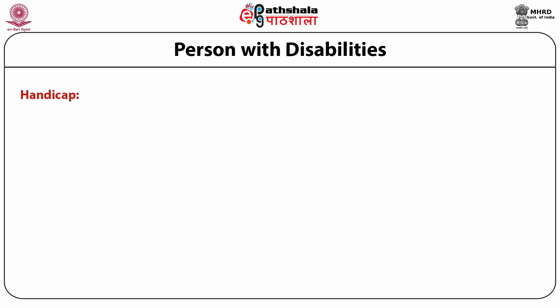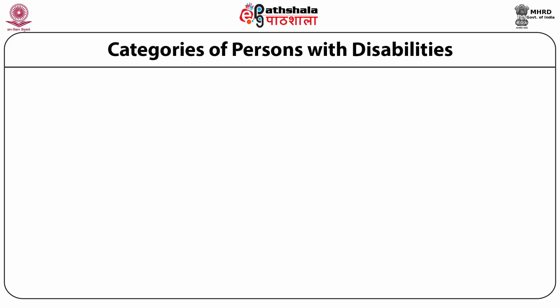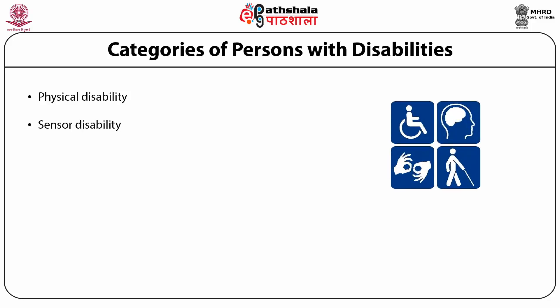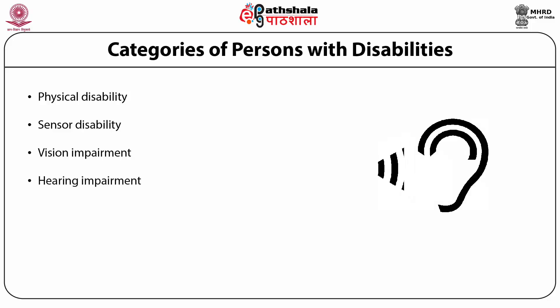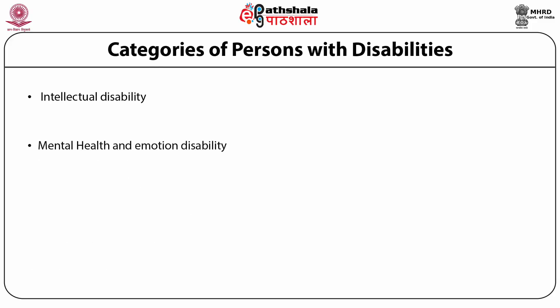Now let us define handicap. Handicap is a disadvantage for a given individual resulting from an impairment or disability that limits or prevents the fulfillment of a role that is normal depending on age, sex and social and cultural factors for that individual. Now let us discuss categories of persons with disability. First is physical disability. Second is sensory disability, which can be further sub-divided into vision impairment, hearing impairment, olfactory and gustatory impairment, somatosensory impairment and balance disorder. Next is intellectual disability, mental health and emotion disability, pervasive development disorders, and lastly non-visible disorder.